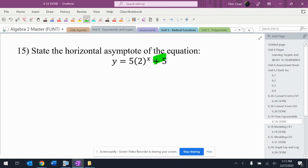Okay, horizontal asymptote here. Just look at the number at the end. It's got a plus five, so it's y equals positive five.